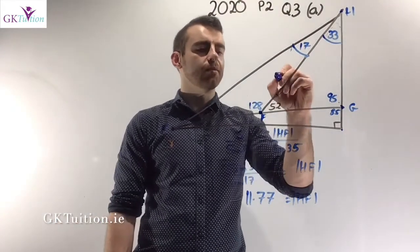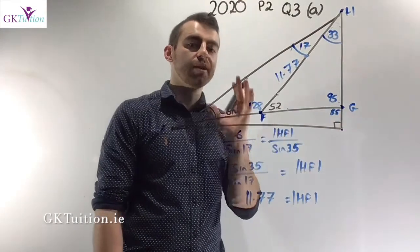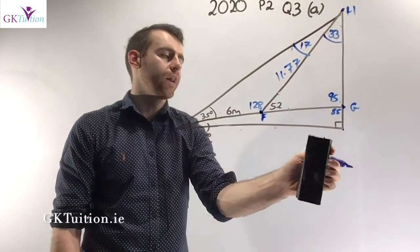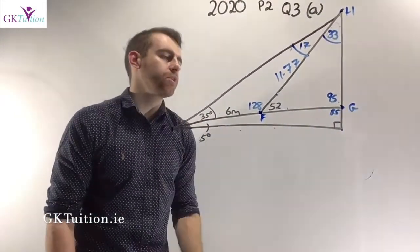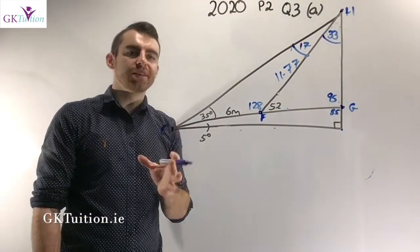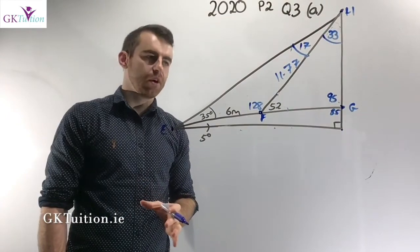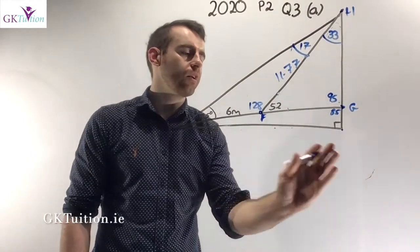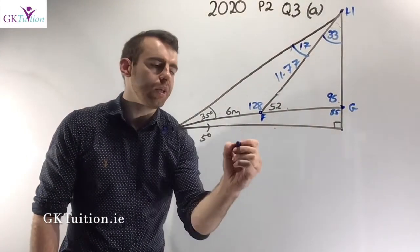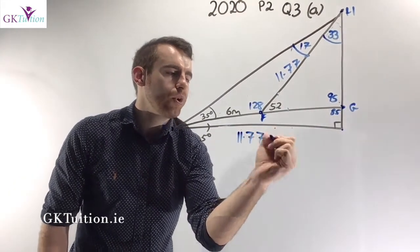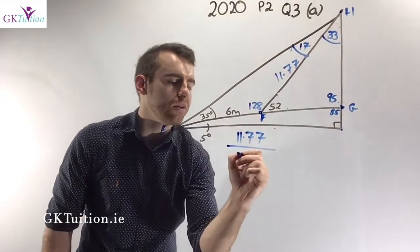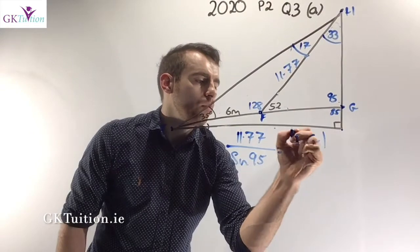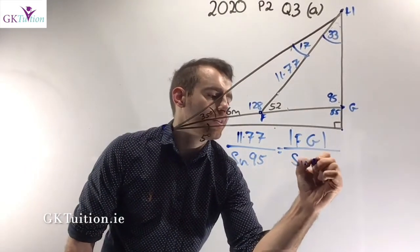Now I know the distance from H to F is 11.77, so I can concern myself with the triangle I'm actually interested in: triangle HFG, to find distance FG. Once again I can use the sine rule because I know a side and its opposite angle. Substituting into the sine rule: 11.77 over sine of its opposite angle — which is sine 95 — equals FG over sine of its opposite angle, which is sine 33.